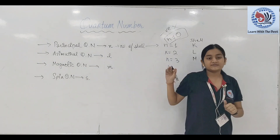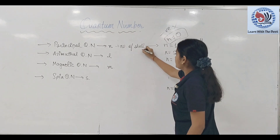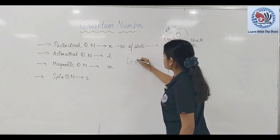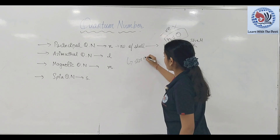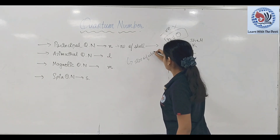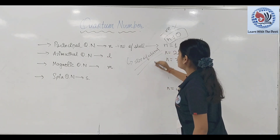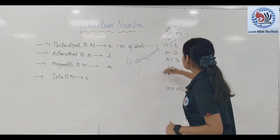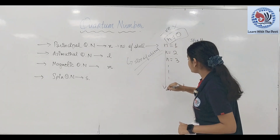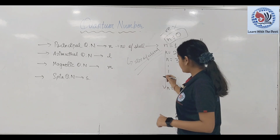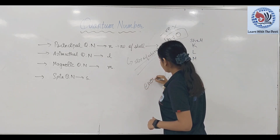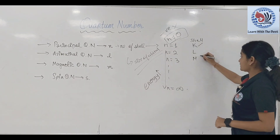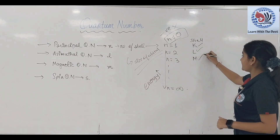Principal quantum number से हमें size of orbital के बारे में पता चलता है। As the number of shells की value बढ़ते जाएगी, तो energy increase होती जाएगी — K shell की सबसे कम energy होगी, फिर L, फिर M बढ़ते जाएगी।